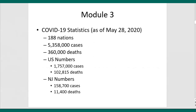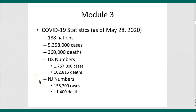As of May 28, 2020, COVID-19 had been detected in 188 nations, resulting in almost 5.4 million cases and 360,000 deaths. In the U.S. alone, we had nearly 1.8 million cases — that number will surely exceed 2 million — and almost 103,000 deaths as of May 28th. In New Jersey, there were 158,700 cases with 11,400 deaths as of May 28th.